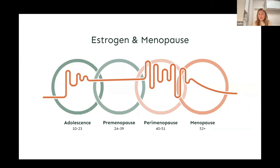It's important to understand how estrogen changes throughout our lives. In adolescence, when we start developing sexually, estrogen rises — this is what promotes the development of primary and secondary sexual functions. In our reproductive age, estrogen is generally high but changes in cycles with our menstrual cycles. As we approach perimenopause, estrogen starts fluctuating a lot.